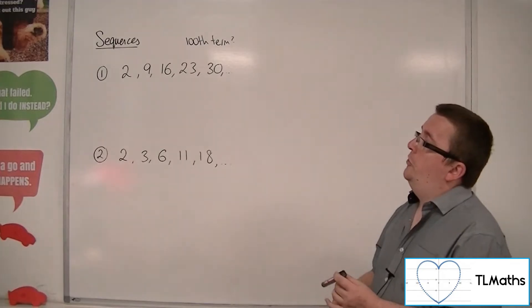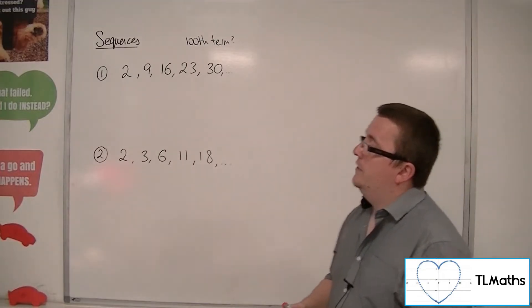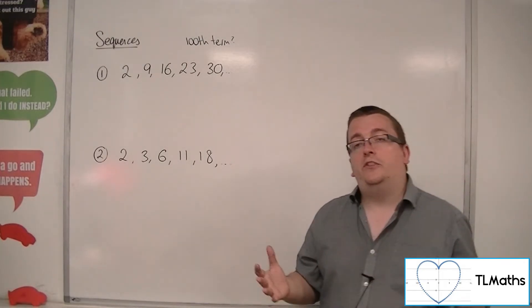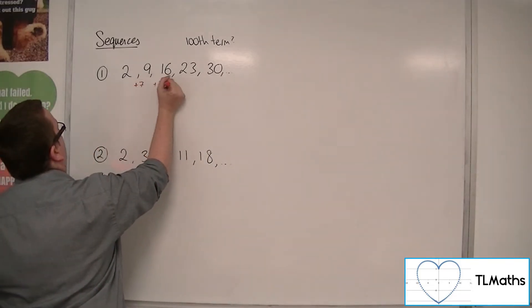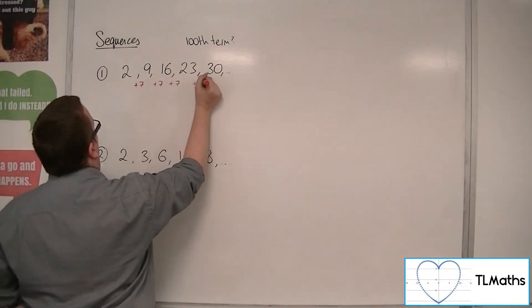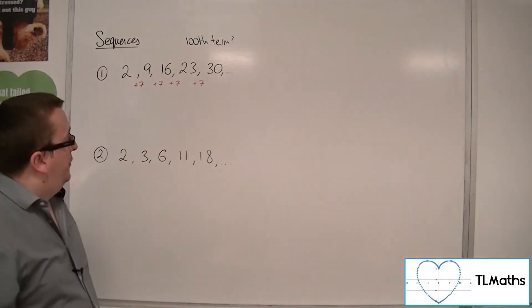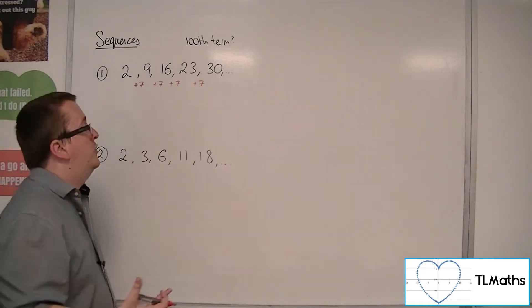So for this first one, we've got 2, 9, 16, 23 and 30. Probably one of the first things that you've been taught to do was to make sure that you figure out what it's going up in each time. That's always a good shout. And because this is going up in a constant fashion, this is going up in sevens.